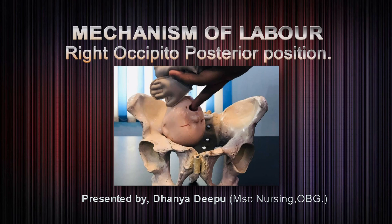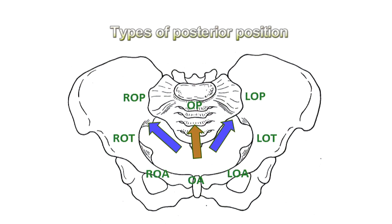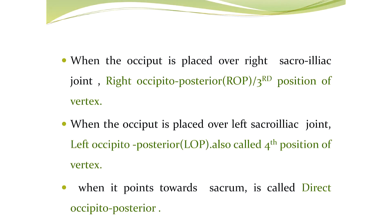For an introduction, occipital posterior position is an abnormal position of the vertex rather than an abnormal presentation. In a vertex presentation, when the occiput is placed posteriorly over the sacroiliac joint or directly over the sacrum, it is called occipital posterior position. When the occiput is over the right sacroiliac joint it is right occipital posterior (third position of vertex); over the left sacroiliac joint it is left occipital posterior (fourth position of vertex); pointing towards the sacrum it is called direct occipital posterior.